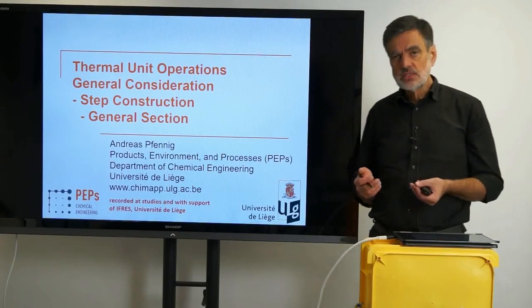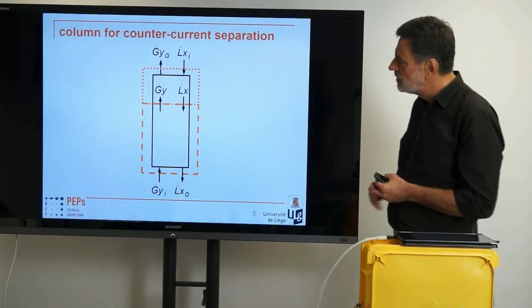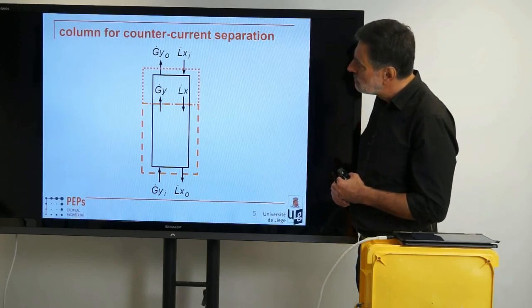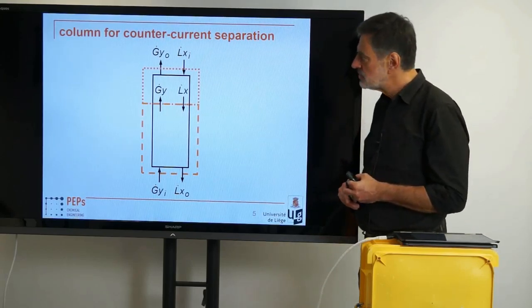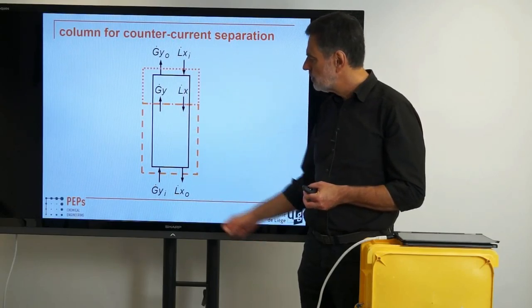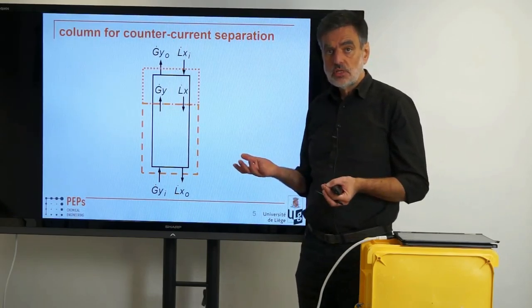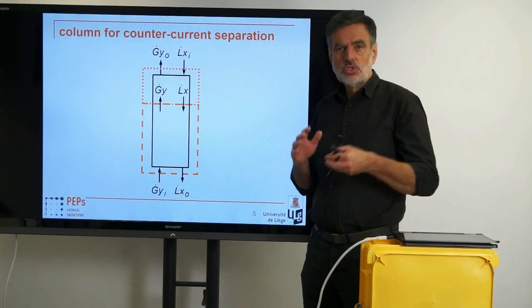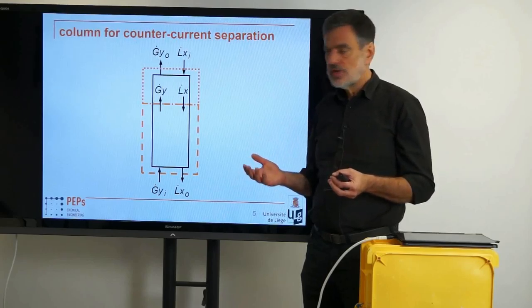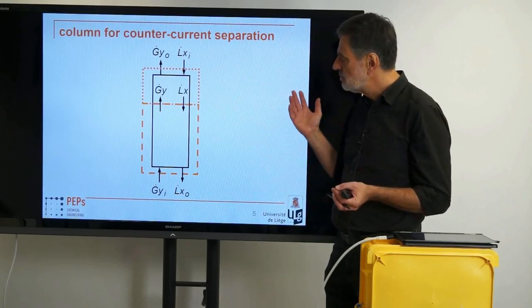In order to set up the balances, we first have to regard such a general section, shown here together with the corresponding control volumes. We have a general section with counter-current flow: an L-dot phase moving from top to bottom and a G-dot phase flowing from bottom to top. As mentioned in the previous video, we don't define the state of the two phases — it can be vapor, liquid or solid, whatever you like in principle.